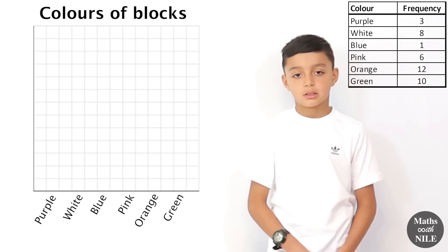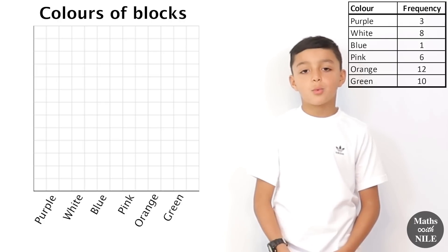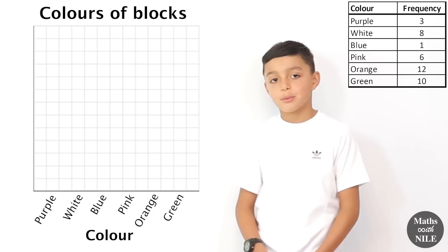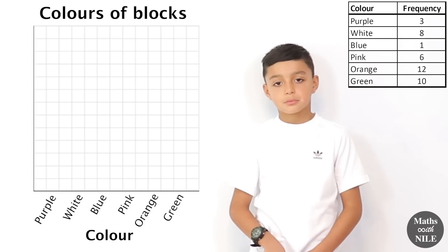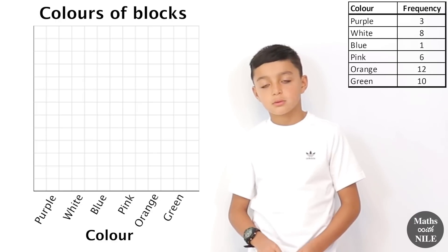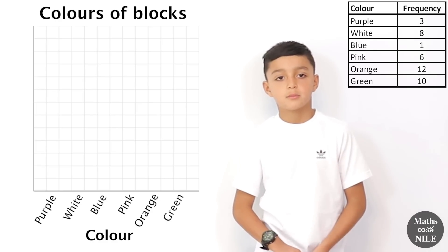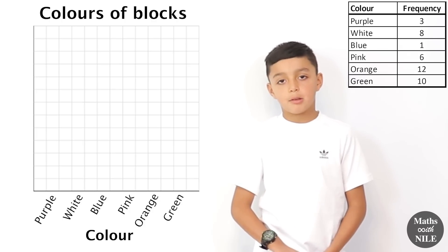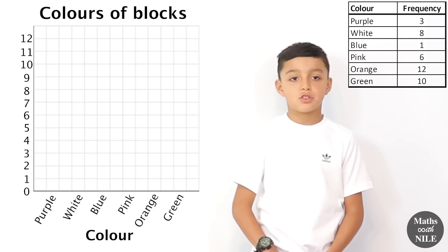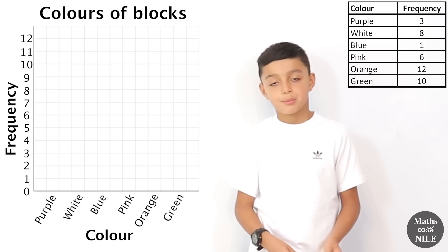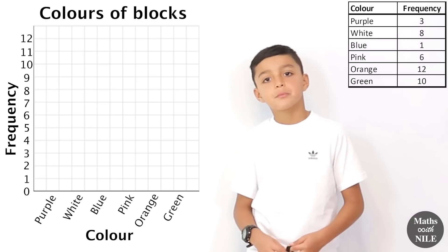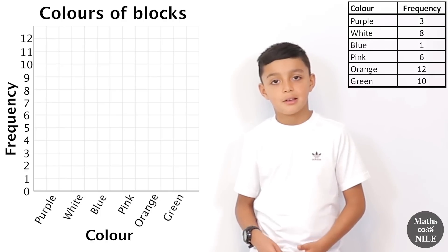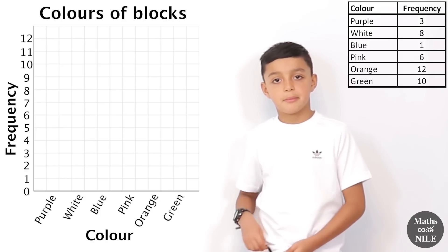Brilliant. And what do we need to then do? We need, at the bottom we'll put like colour. Okay, so we need to label. Yeah, we need to label. That set of information, those are our colours, so we need to make sure we put colours there. And what do we have on our vertical line? We have our numbers, 1 all the way up to 12, and which is called our frequency. Frequency. And why would we stop at 12 and not go to maybe 100? Because we're only going up to 12. So maximum number of blocks of any colour was 12, wasn't it? Yeah.